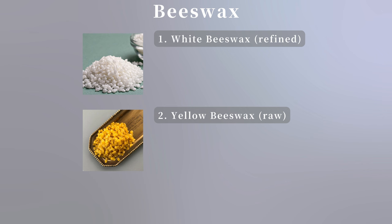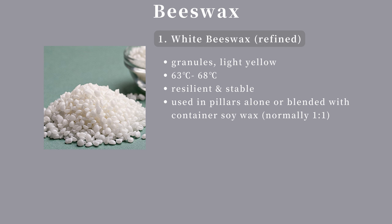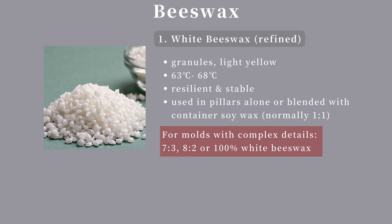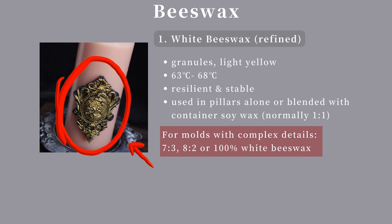The second type of wax is beeswax, categorized into refined white beeswax and raw yellow beeswax. White beeswax exhibits a light yellow color and is harder and smoother in texture compared to soy wax. It can be used alone to make pillar candles or combined with soy wax as a formula wax, enhancing hardness, resilience, and flexibility. For slender tapered candles, a typical ratio is 1:1 of white beeswax to container soy wax. In molds with intricate details, it's necessary to increase the proportion of white beeswax, such as 7:3 or 8:2. Occasionally, 100% white beeswax is used for very complex molds.